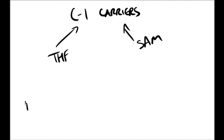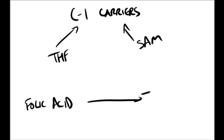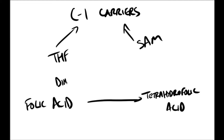Folic acid is a carrier of one carbon units. The active form of folic acid is THF, and it is produced from folate by dihydrofolate reductase in a two-step reaction requiring two NADPH. The carbon unit carried by THF is bound to nitrogen N5 or N10, or to both N5 and N10.